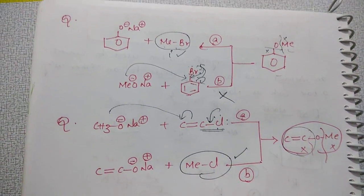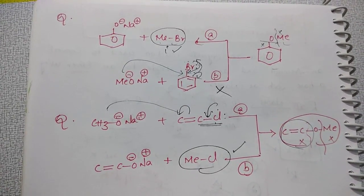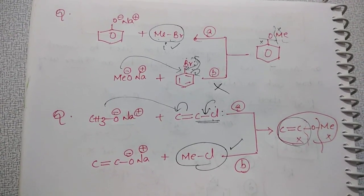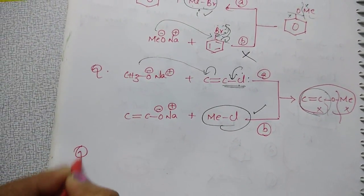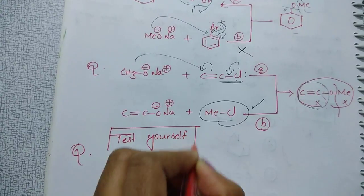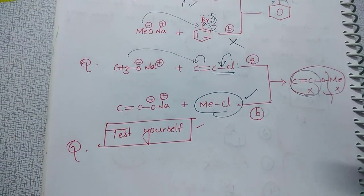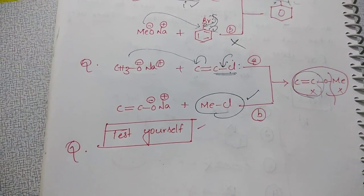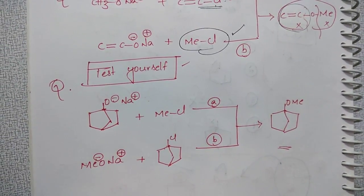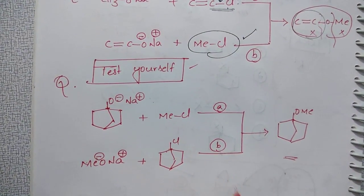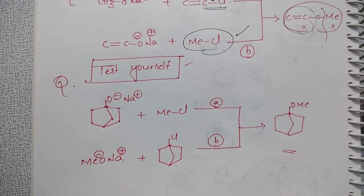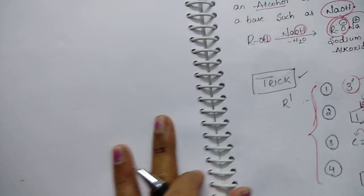I hope you like this trick — many times you get confused when you see Williamson ether synthesis questions, so I made this trick so that you can solve any kind of Williamson ether synthesis question easily. Now, here is a test-yourself question: you want to prepare a bridged ether — which route gives the better yield, A or B? Try this question and comment your answer. Just look at the alkyl halide part.